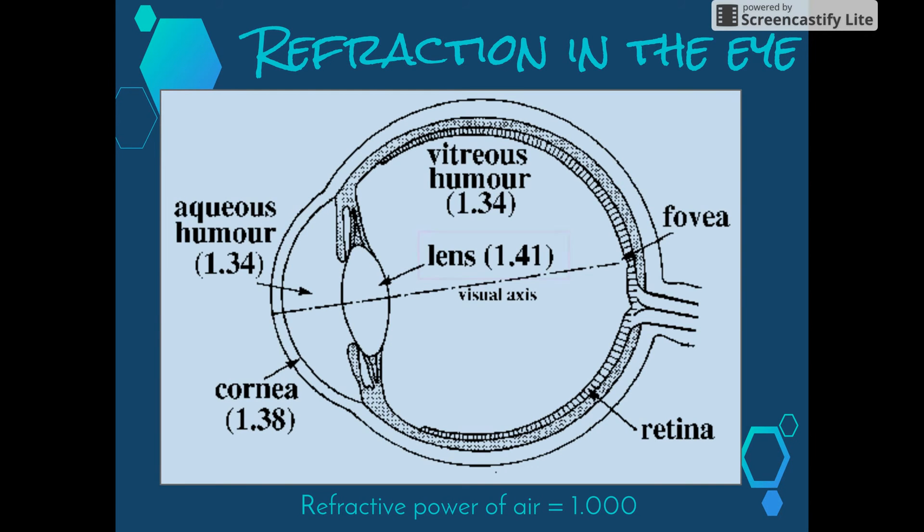The lens is an interesting refractive structure in the eye as it is able to refract light to a greater or lesser degree by altering its shape. This is termed accommodation and is useful in allowing the eye to adjust for near or distant vision.